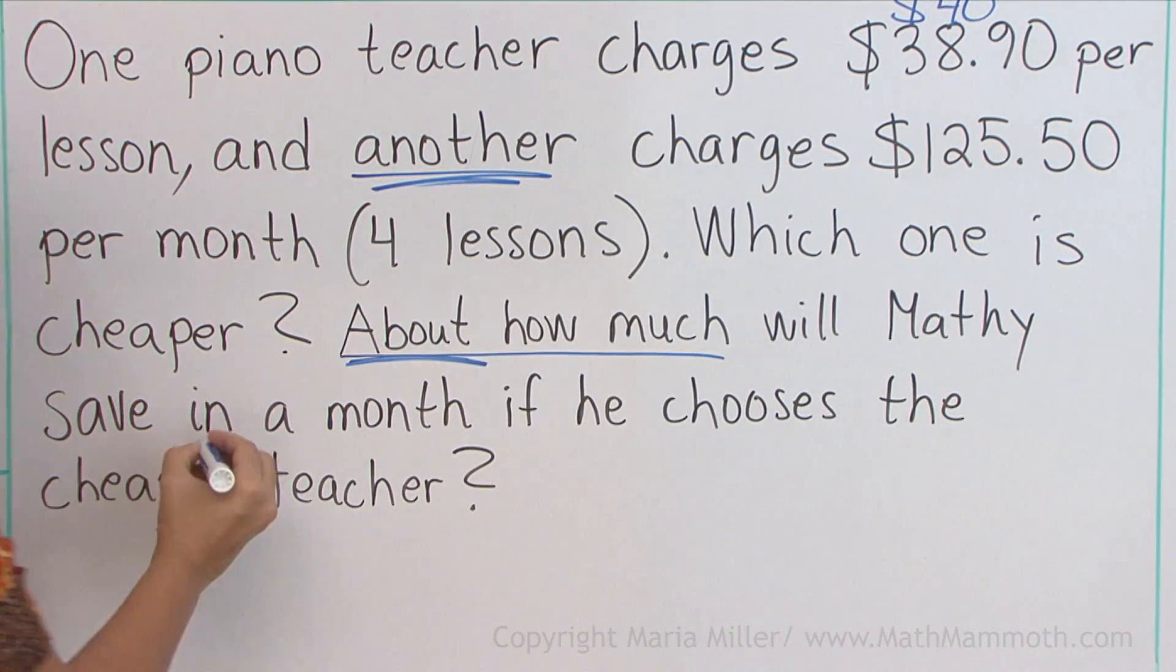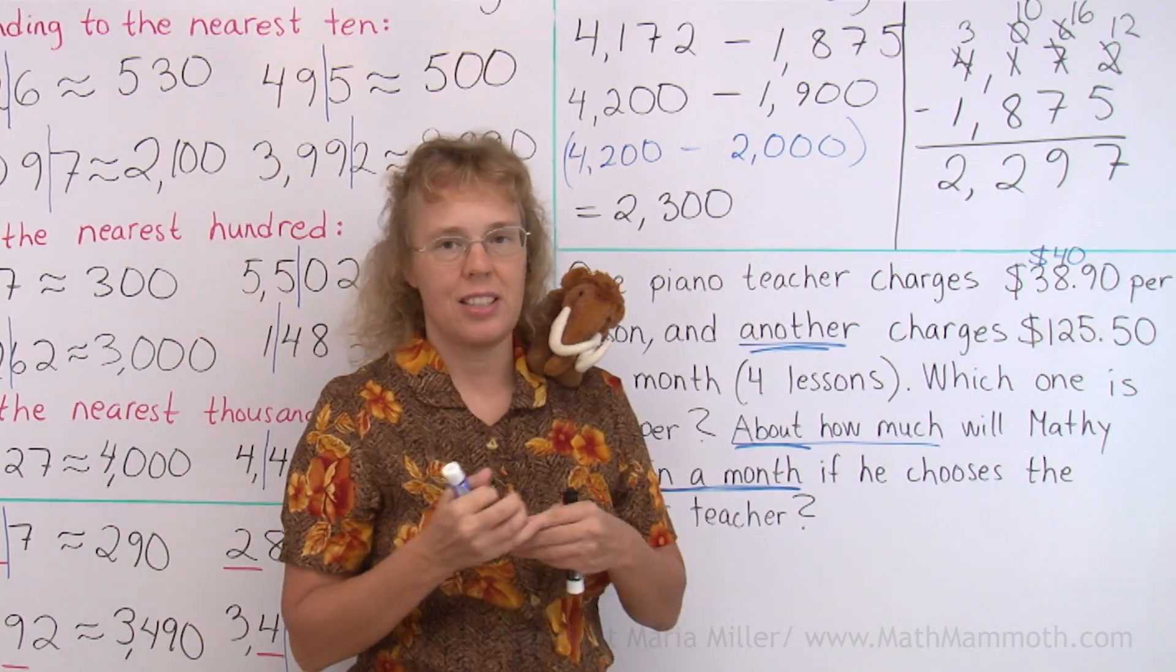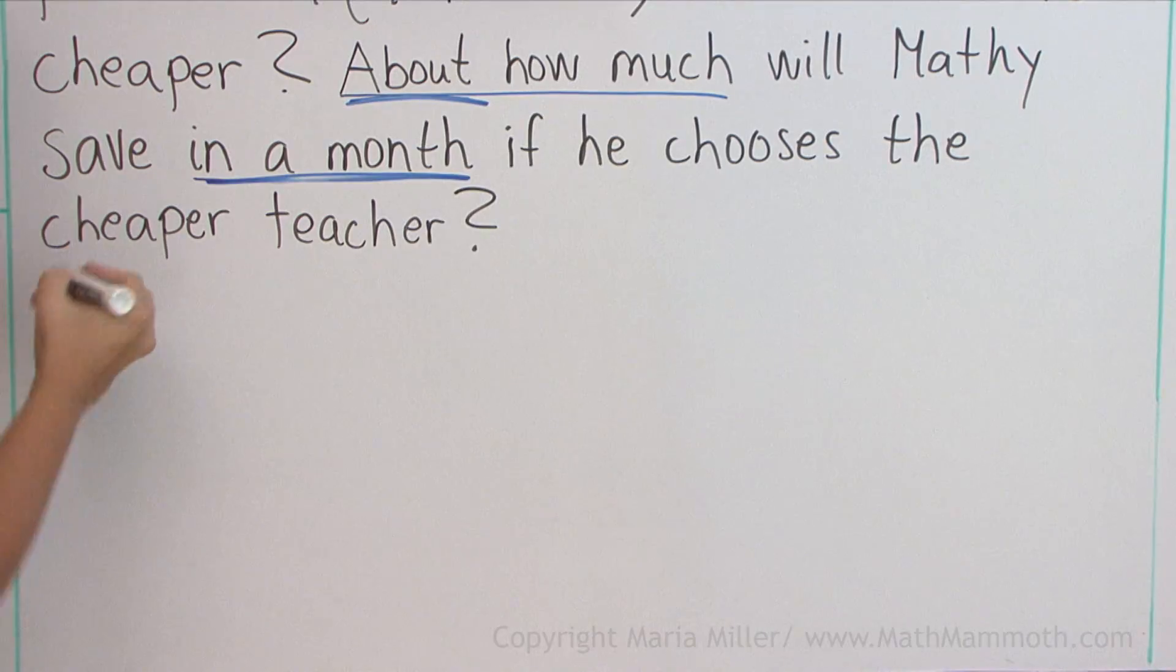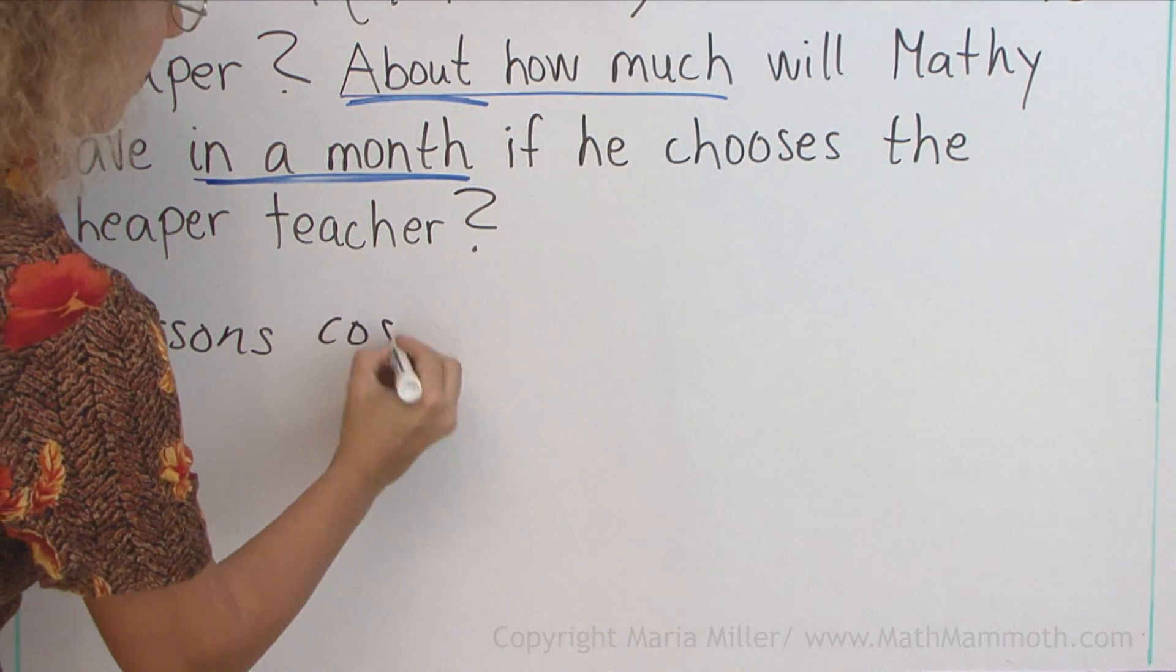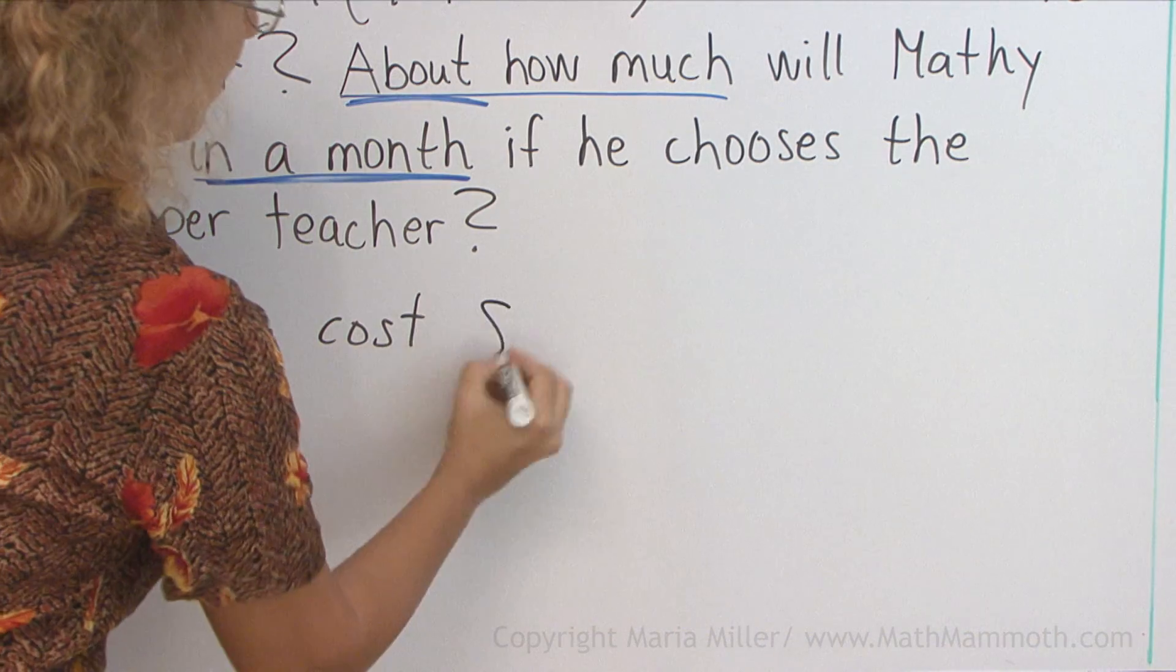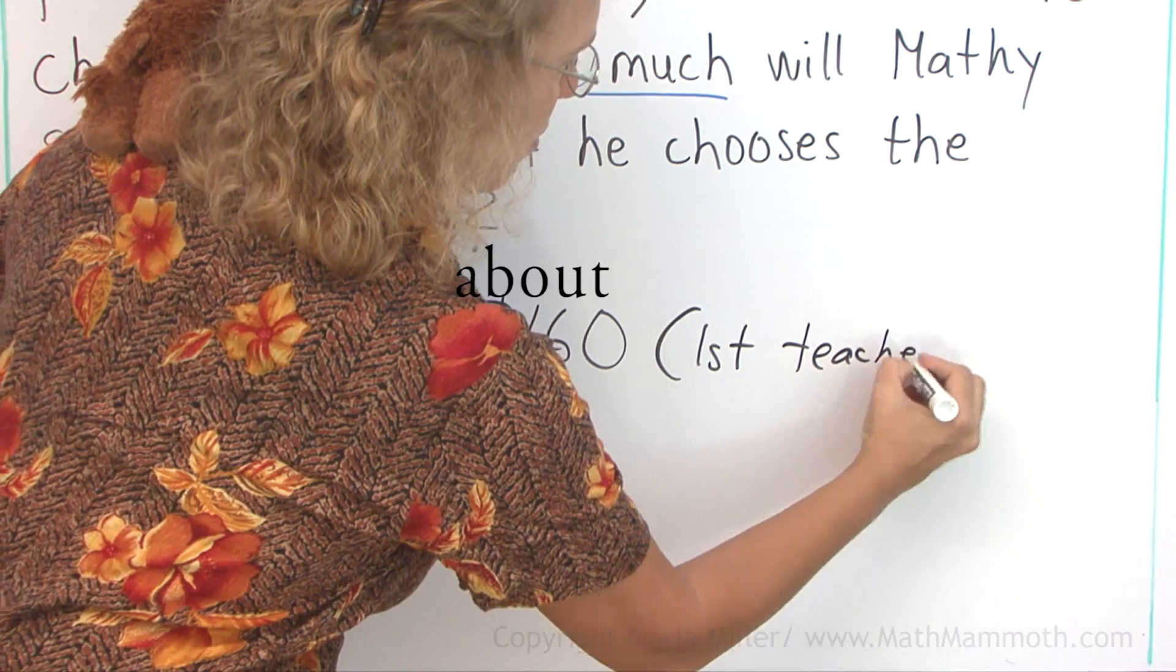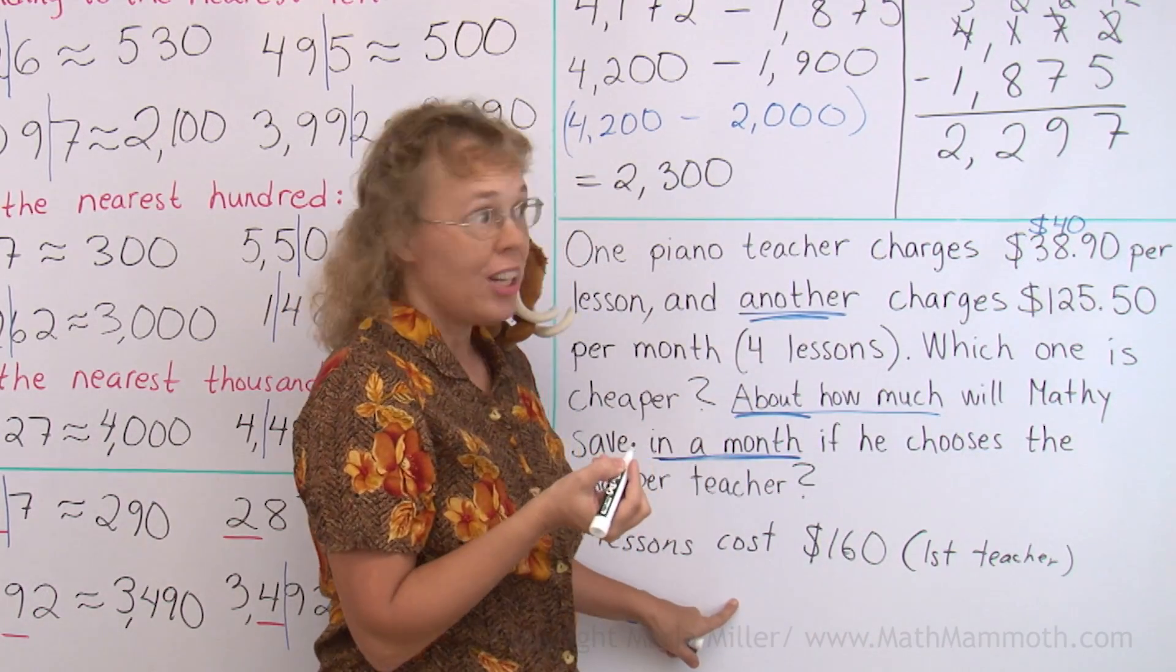And then notice that it's in a month. We are not now calculating how much he saves in one lesson. So in a month or four lessons cost four times that with the first teacher.